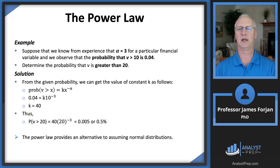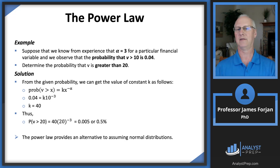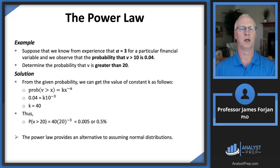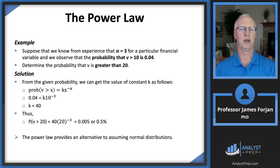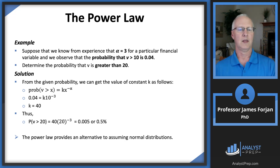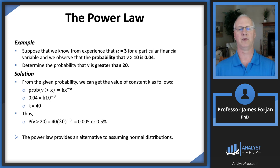Suppose alpha equals 3 for a particular financial variable, and we observe that the probability that v is greater than 10 is 4%. Determine the probability that v is greater than 20. Using the power of law formula, we solve for k: 0.04 = k times 10 to the minus 3, giving k = 40. Substituting k = 40 and x = 20 to the minus 3 gives us 0.5%. Power law provides an alternative to assuming normal distributions — that's really why we use this.